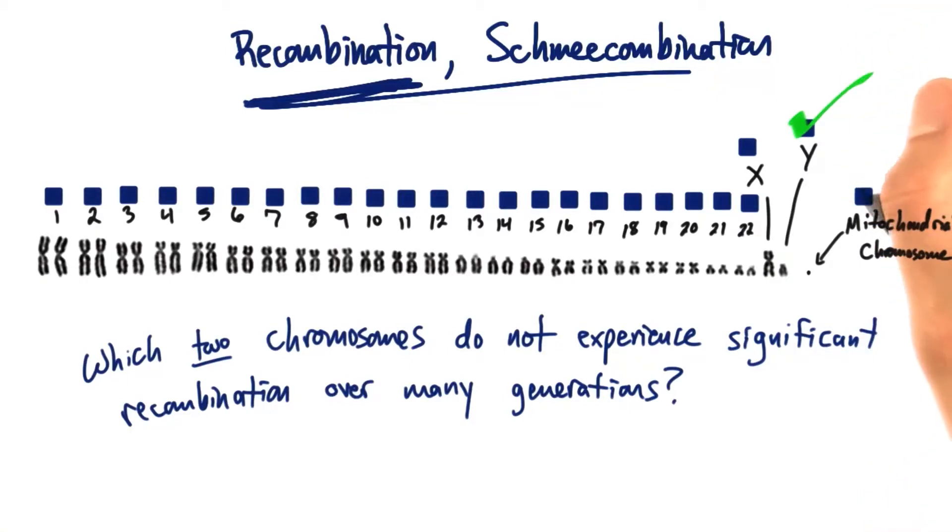Okay, only the Y and the mitochondrial chromosomes don't undergo significant recombination over many generations.